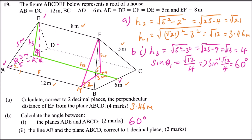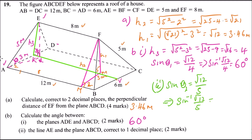For roman numeral (ii): sin θ2 equals H1 over AE, which is √12 divided by 5. This implies θ2 equals sin⁻¹(√12 / 5). Using the calculator — divide √12 by 5, press inverse sine — and we get θ2 equals 43.9 degrees.